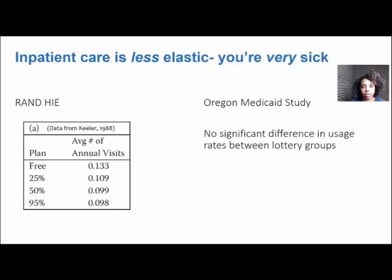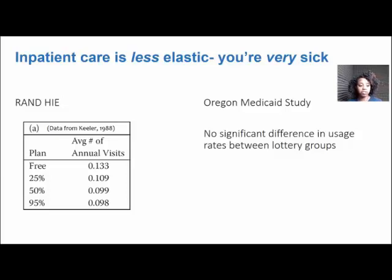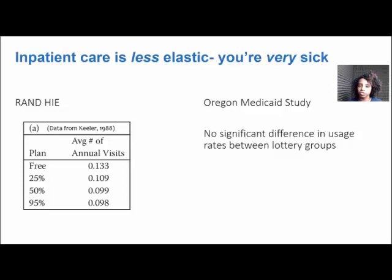Inpatient care, on the other hand, is a lot less elastic. You're not getting signed up for inpatient hospital care — overnight care — unless you're really sick. It's less common to begin with: 0.13 episodes on average even in the free care plan, and the difference between that and the 95% plan is not as large in magnitude. In the Oregon experiment, they couldn't actually find any difference between the groups, so any effect is really small.